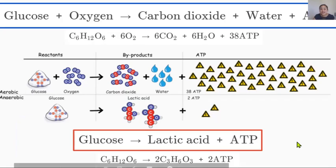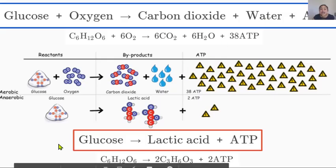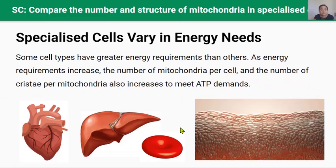So let's go over that again. Aerobic respiration uses glucose and oxygen to produce a lot of ATP, with carbon dioxide and water as byproducts. Whereas anaerobic respiration just uses glucose — it doesn't need oxygen — to make a small amount of ATP and lactic acid.